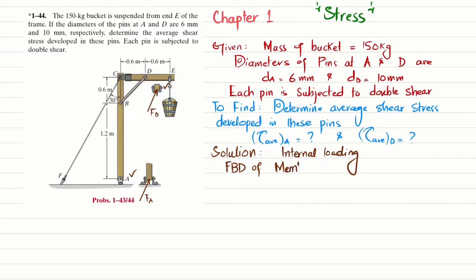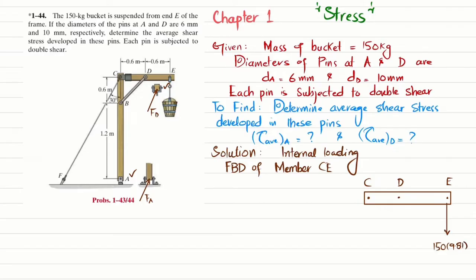If I draw the free body diagram of member CE — this is point C, this is point D, and this is point E. At point E we have the 150 kg bucket acting, so the weight equals 150 × 9.81 using the formula mg. At point D, the force acted by the short strut BD will be equal to F_BD. At point C we have a pin support, giving horizontal reaction C_x and vertical reaction C_y. The distance between C and D is 0.6 meter.